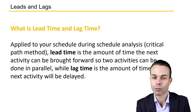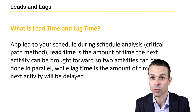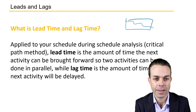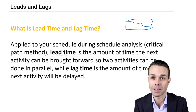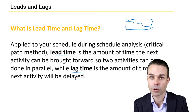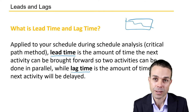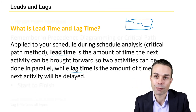Lead time and lag time apply to your schedule during your schedule analysis — looking at the critical path method, finding that critical path, and determining what the shortest duration your project can be. Lead time is the amount of time that the next activity can be brought forward so two activities can be done in parallel. Lag time is the amount of time that the next activity will be delayed — it is lagging behind. Lead time we are leading it forward.